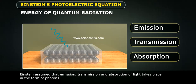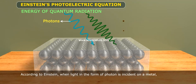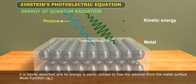Einstein assumed that emission, transmission and absorption of light takes place in the form of photons. According to Einstein, when light in the form of photon is incident on a metal, it is totally absorbed. And its energy is partly utilized to free the electron from the metal surface.